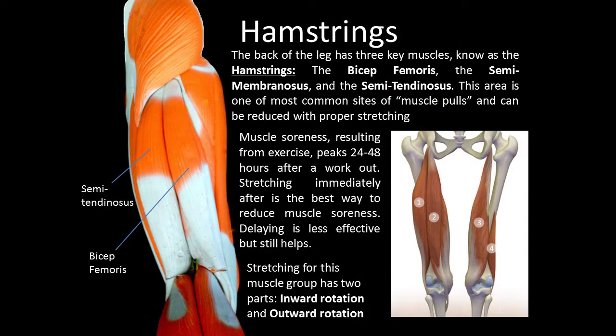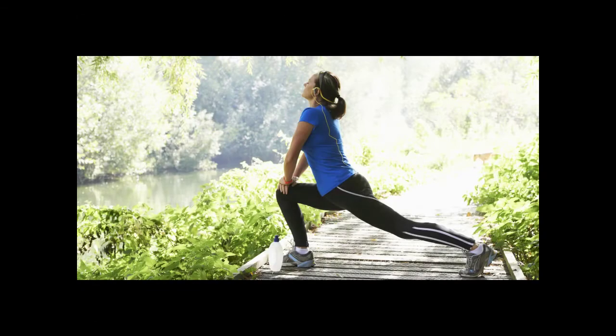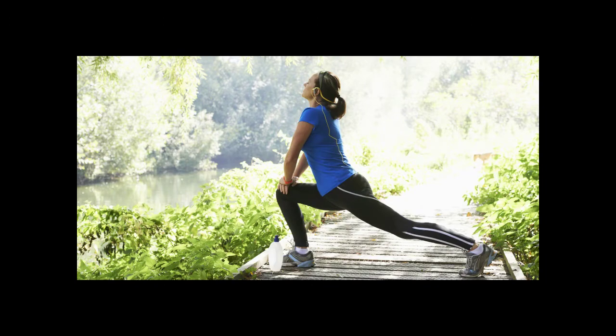The back of the leg has three key muscles known as the hamstrings: the bicep femoris, the semimembranosus, and the semitendinosus. This area is one of the most common sites of muscle pulls, and can be reduced with proper stretching. Muscle soreness resulting from exercise peaks 24 to 48 hours after a workout. Stretching immediately after is the best way to reduce muscle soreness. Delaying is less effective, but still helps.